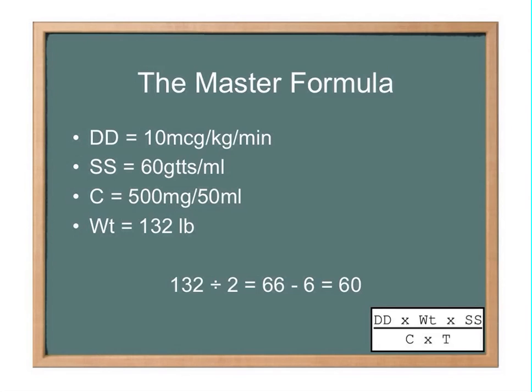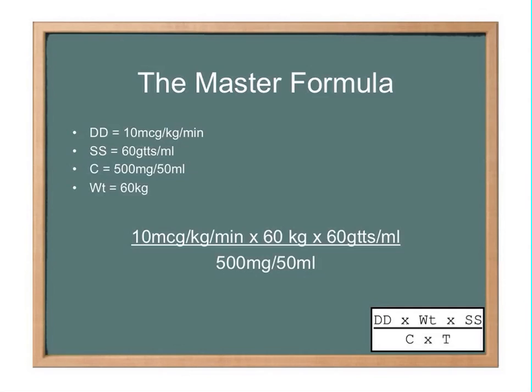Okay, now we can plug everything in to the master formula. I'm going to try to color code this. Our desired dose went right here. The solution set is over here where it belongs. The concentration came down to the bottom where it goes. And the patient's weight is right up there. And if you look right over here, you'll see that that all kind of correlates to that. You'll be wondering why we're not using the time component. That's because this desired dose here is per minute. So if I were to use a time component, I would just be saying times one. And you don't really need to put that there. You know that that's kind of just going to cancel out anyhow.